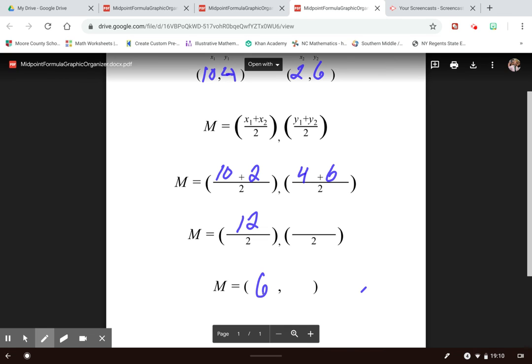4 plus 6 is 10, 10 divided by 2 is 5. So same thing, if I look here, both of these points again are in quadrant 1. So I'll estimate 10, 4 over here, about right there. And then 2, 6, if I estimate that to be about right up here, and draw that line to connect them together. And then 6, 5 is right there in the middle. So there's your midpoint.